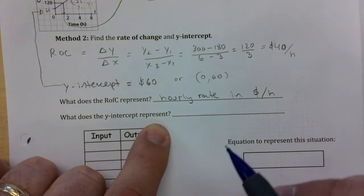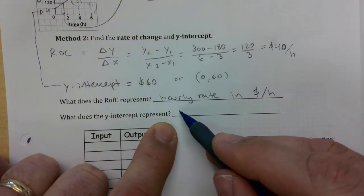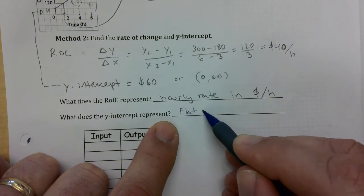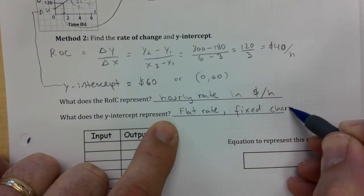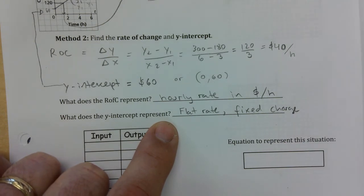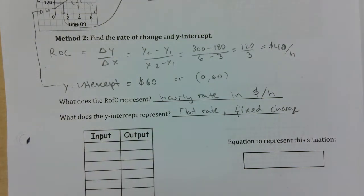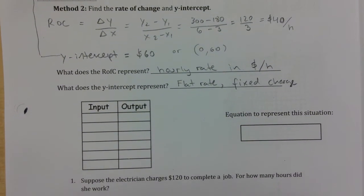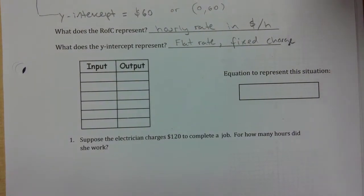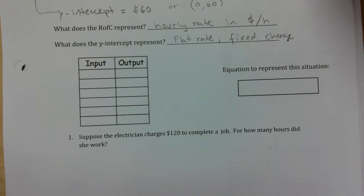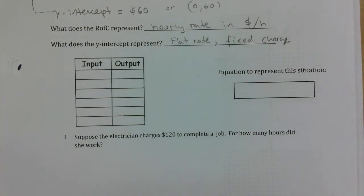The y-intercept represents the flat rate in this particular case. Taxis, plumbers, any kind of service — if you call somebody, there's a flat fee just for showing up. It's the standard base rate. It used to be like cell phones: you paid a certain amount and then paid for extra minutes, but nowadays everything is essentially unlimited.